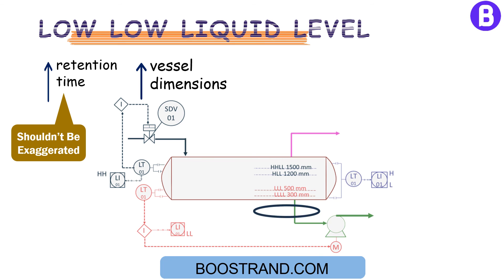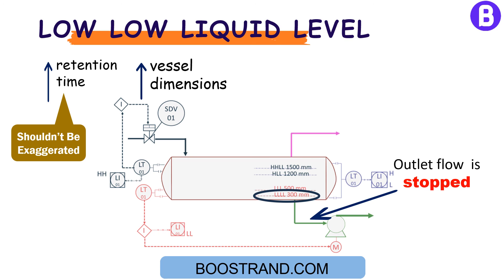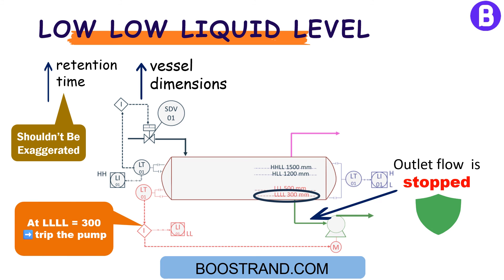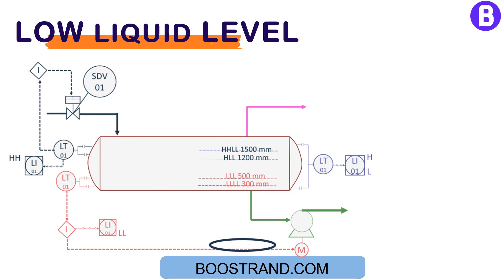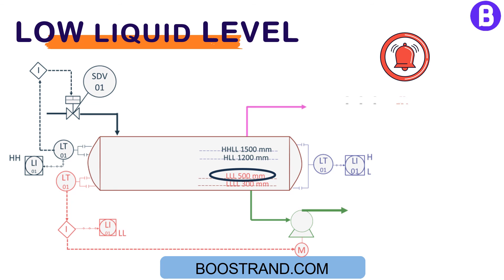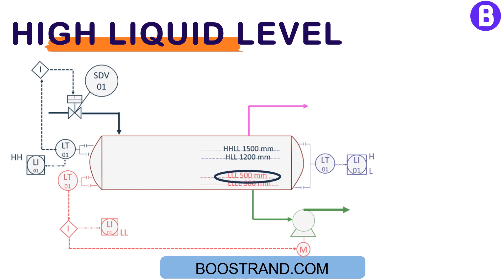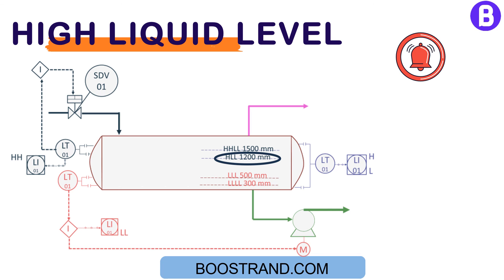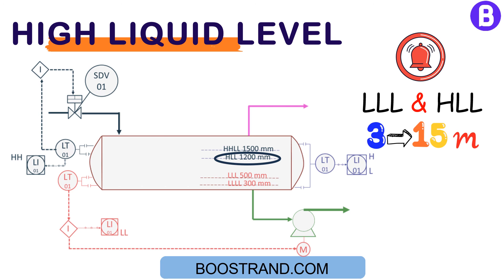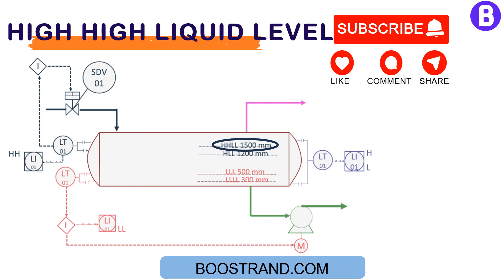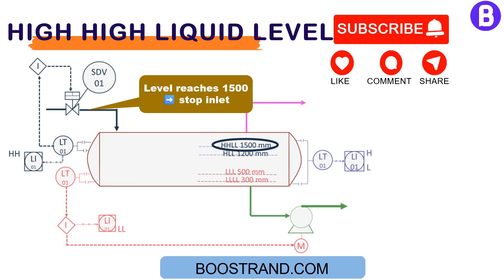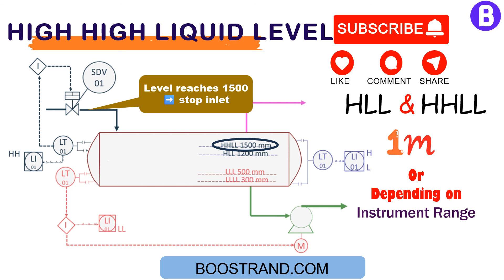The retention times are used to size and obtain the liquid levels: low low level, where the outlet flow from the vessel would be stopped — usually linked with safety interlocks to stop the pump or close the shutdown valve; low level, where the operator would receive an alarm; the usual timing between low level and low low level is one minute or depending on the instrument range, whichever is greater; high liquid level, where the operator would receive an alarm — the usual timing between low level and high level is 3 to 15 minutes depending on the criticality of the service; and high high level, where the inlet flow to the vessel shall be stopped, with the usual timing between high level and high high level being one minute or depending on the instrument range, whichever is greater.